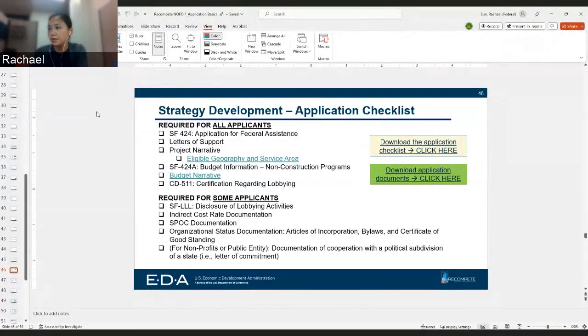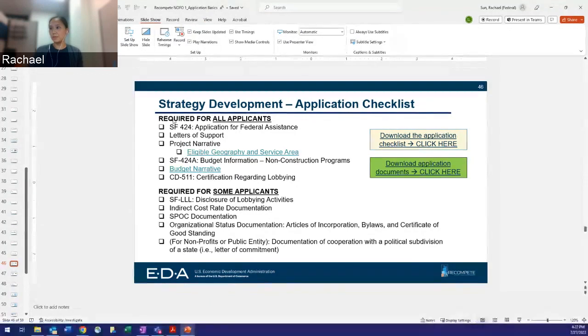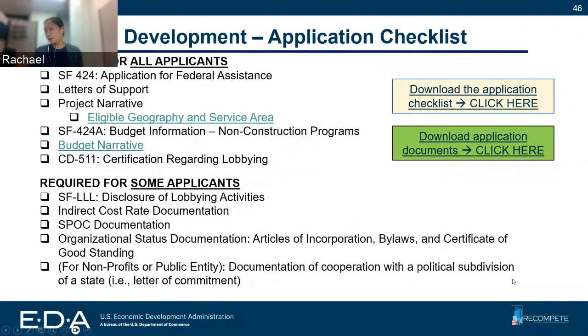We will distribute these slides after this presentation — they'll be posted on our EDA Recompete website. The recording of this webinar will also be posted for folks who want to refresh. There are two sets of application requirements for this program: one is the requirements for strategy development applications, and the second is requirements for the Recompete Plan applications. We'll talk through each of these forms over the next 10 minutes or so.